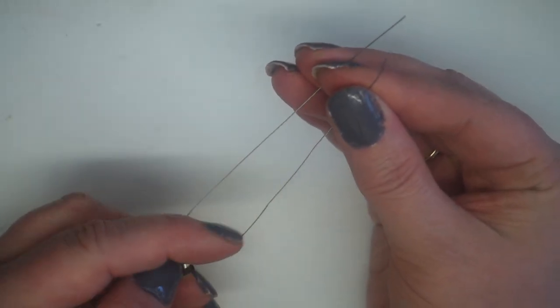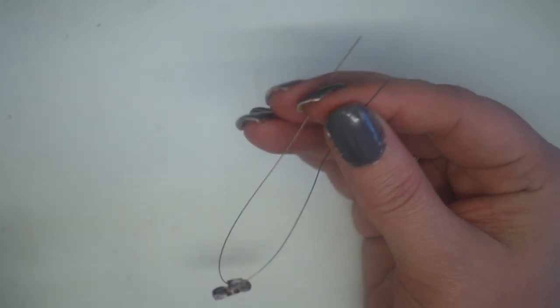Then I'm going to go ahead and I'm going to put three of the emerald crystals on each side of the beading thread.